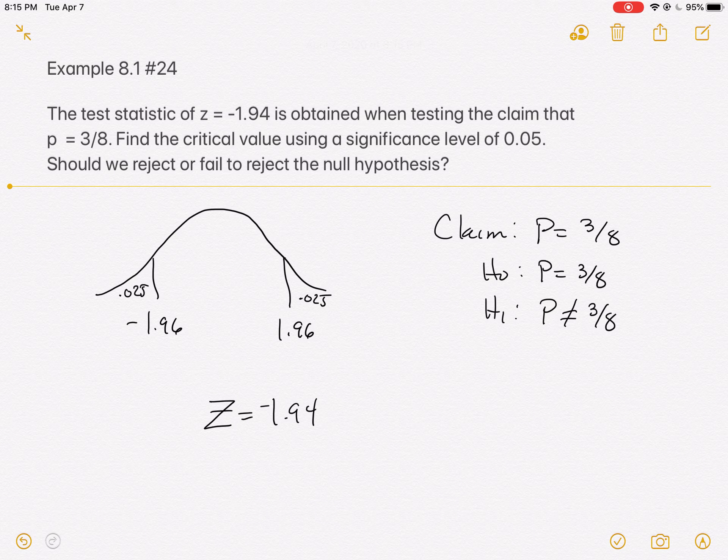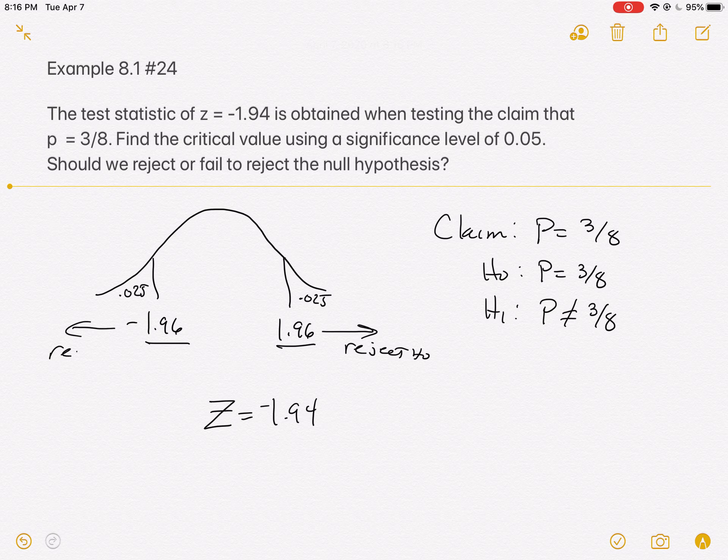The test statistic measured how far the sample value was from 3/8, the value in the claim. They found that it was negative 1.94, which seemed a long ways, but it's actually not far enough. Remember, you have to be beyond the critical values in order to reject. This is the way that you reject the null hypothesis. Or if you're back here, you're going to reject. But if you're too close to center, you're going to fail to reject. Your data is just not strong enough. And that's where we're at. Negative 1.94 falls within the fail to reject area.